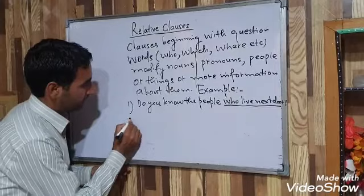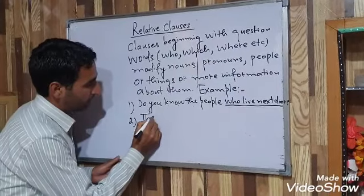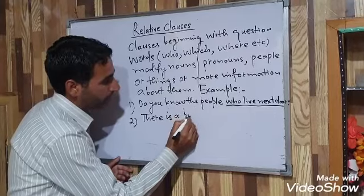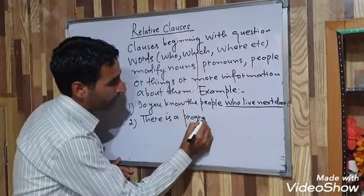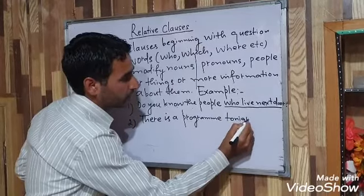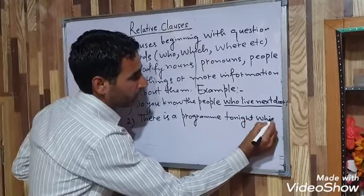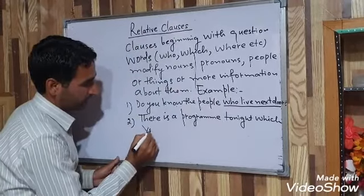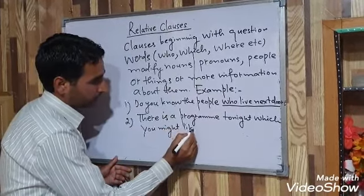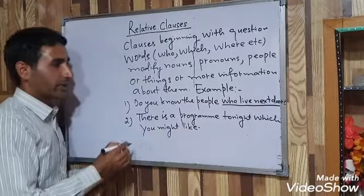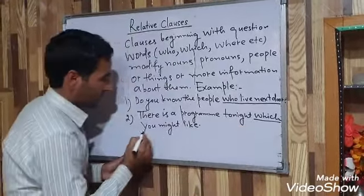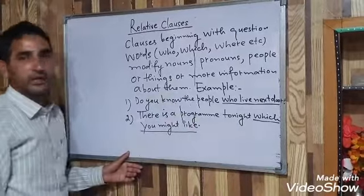Number two: 'There is a program tonight which you might like.' Again, there is a Relative Clause — 'which you might like' — and it tells us something about this program.